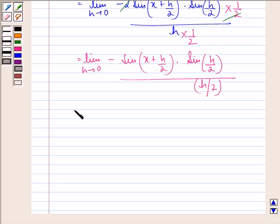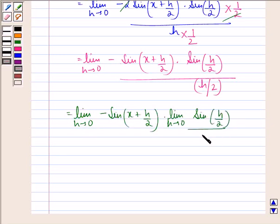Now we can say this is equal to limit h approaching 0, minus sin(x+h/2) times limit h approaching 0, sin(h/2) divided by (h/2). Now we know that limit h approaching 0, sin(h/2) divided by (h/2) is 1.